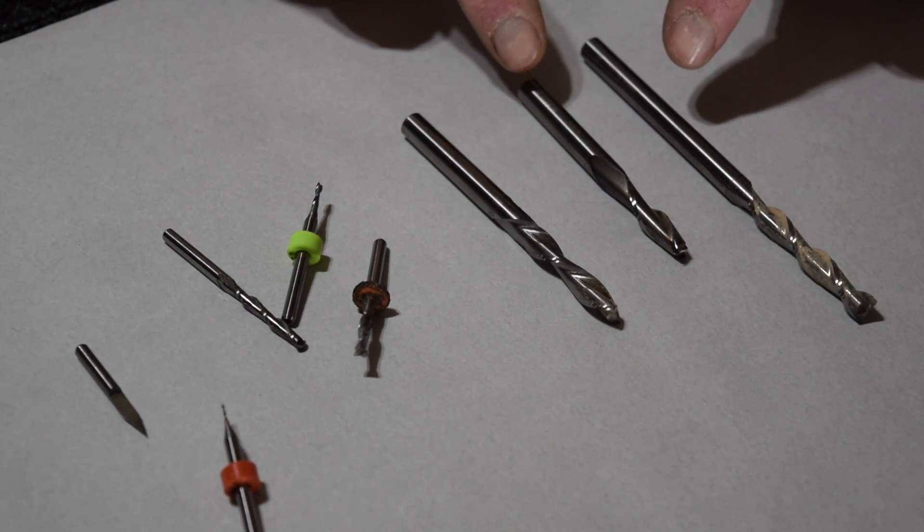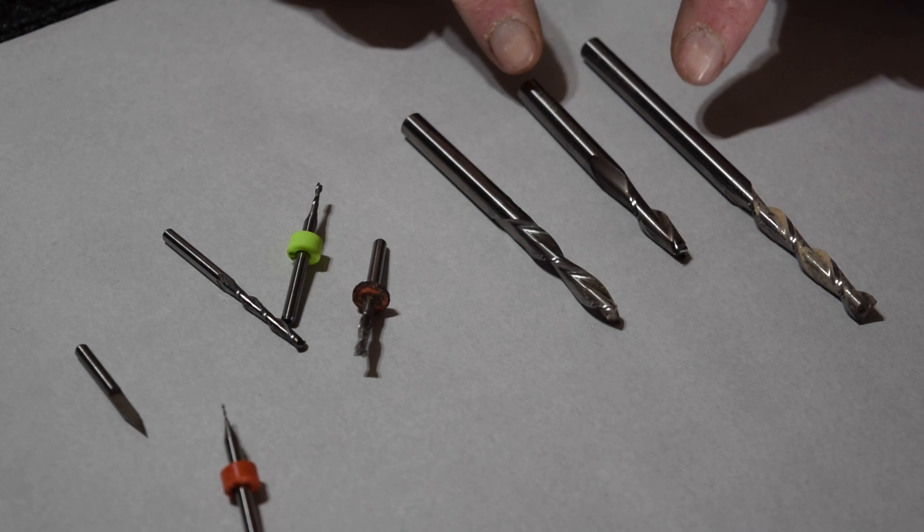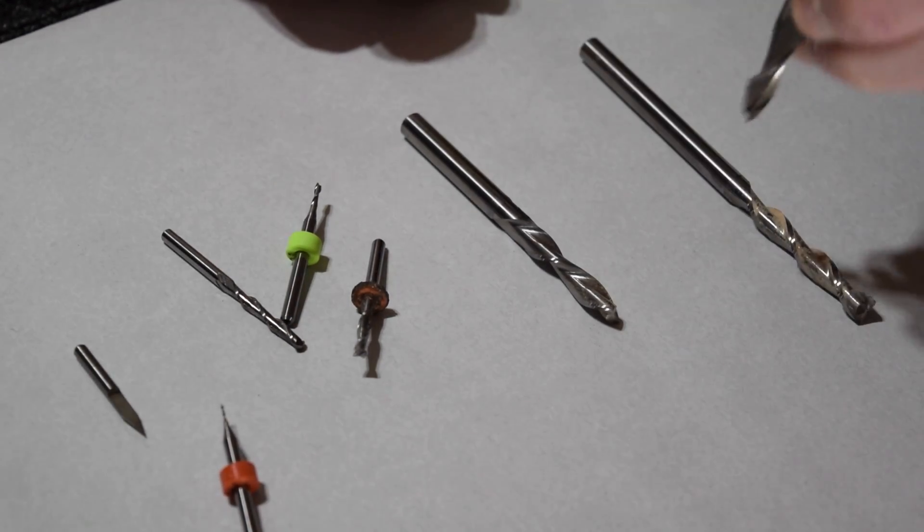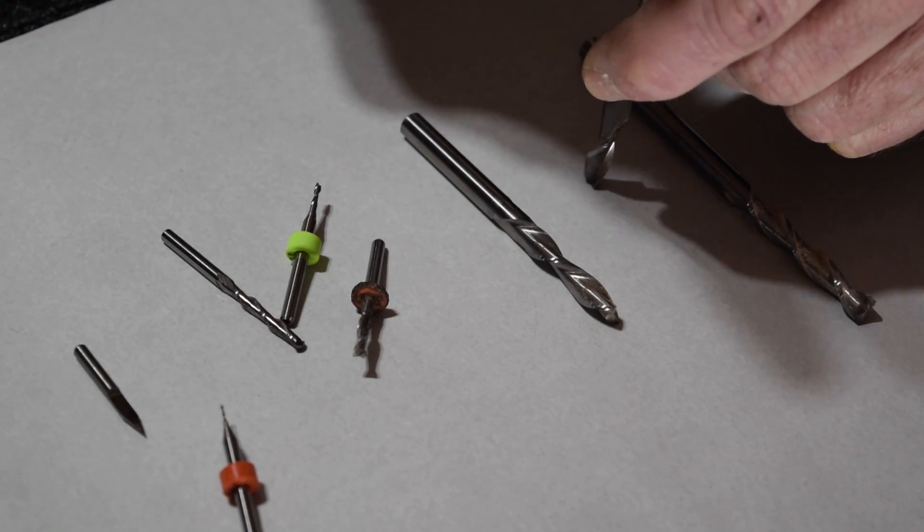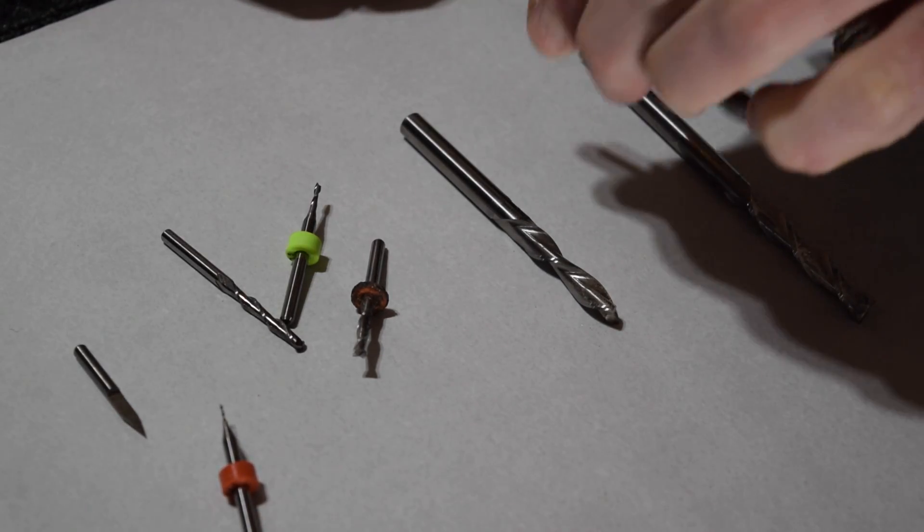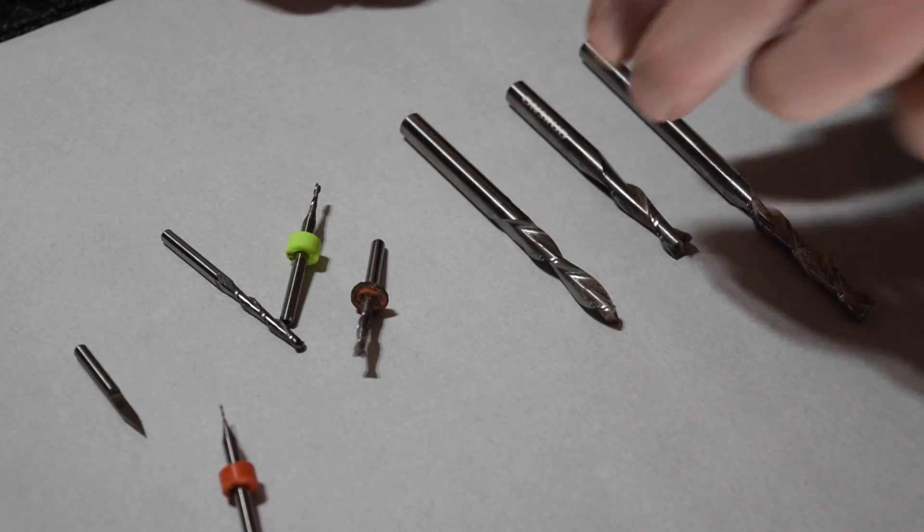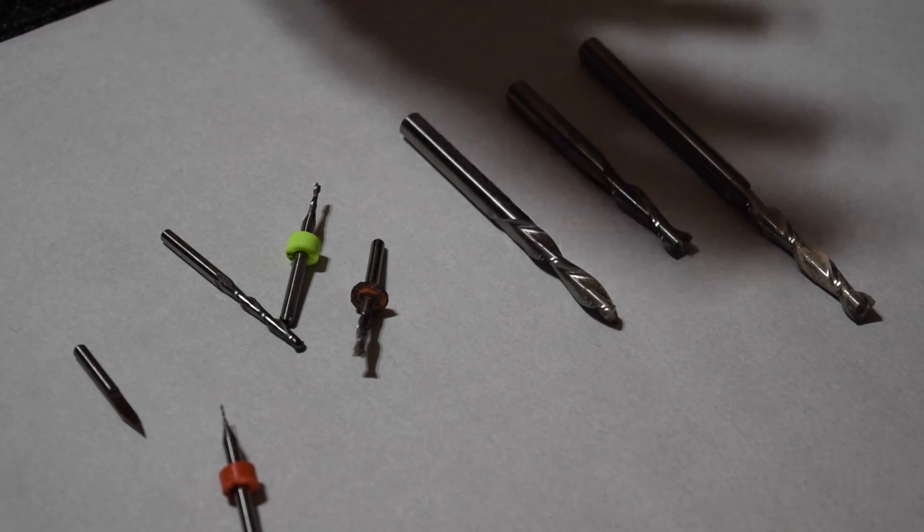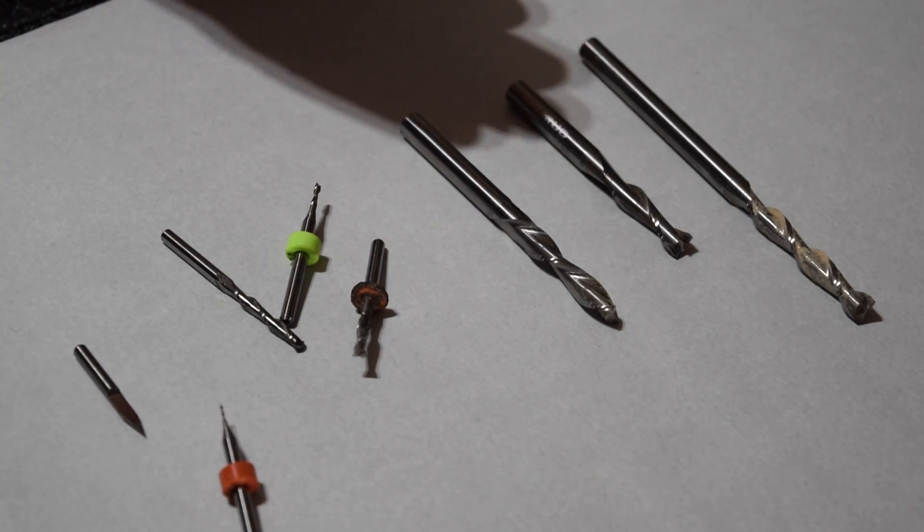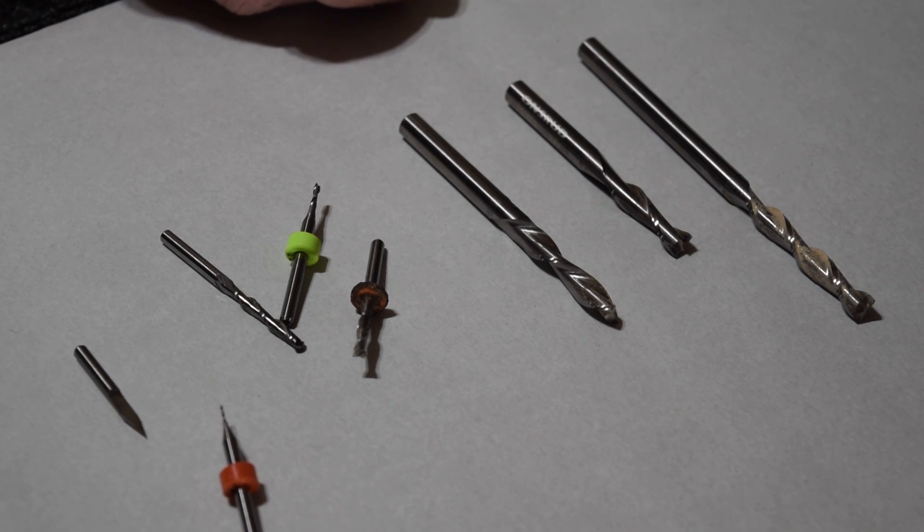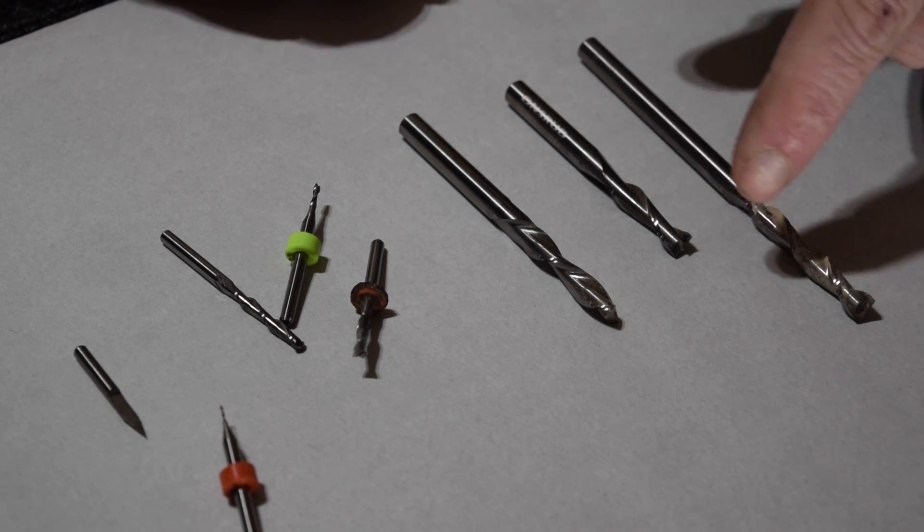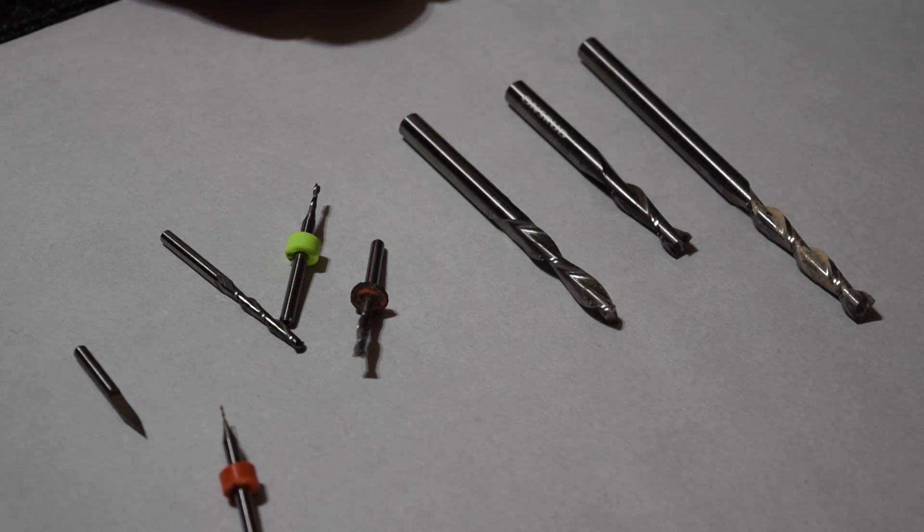And these two are what are known as upcut bits and that means as the bit is cutting it's pulling the chips up and out of the pocket or the slot to fill up with wood chips and jam the router which has never happened with me but it's always nice to know that I'm not going to have that issue.